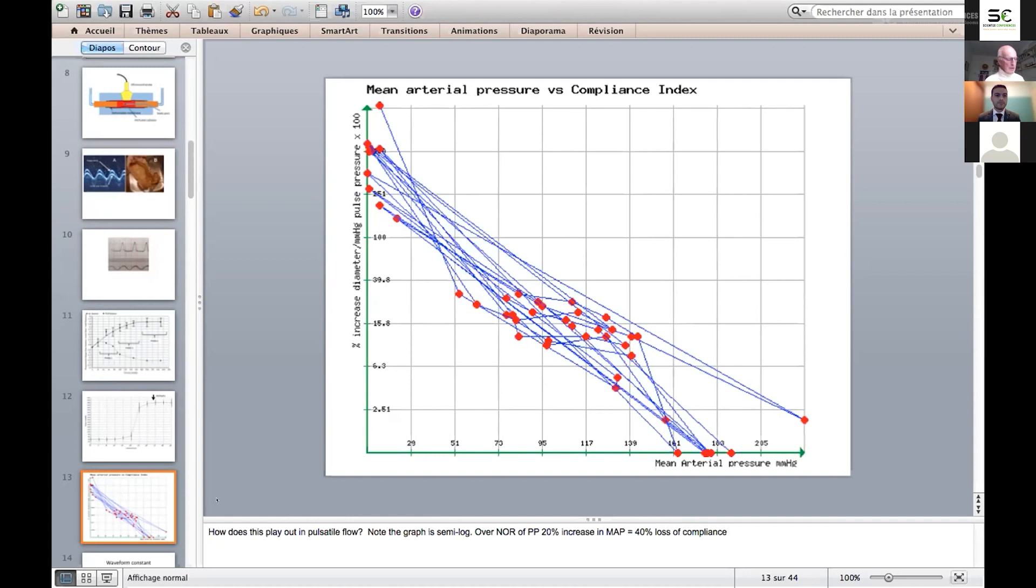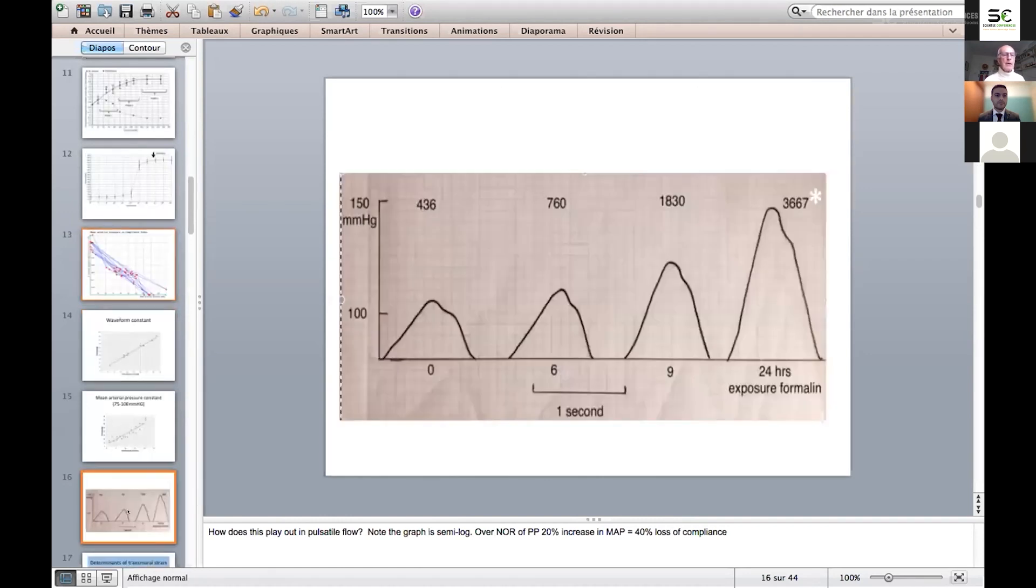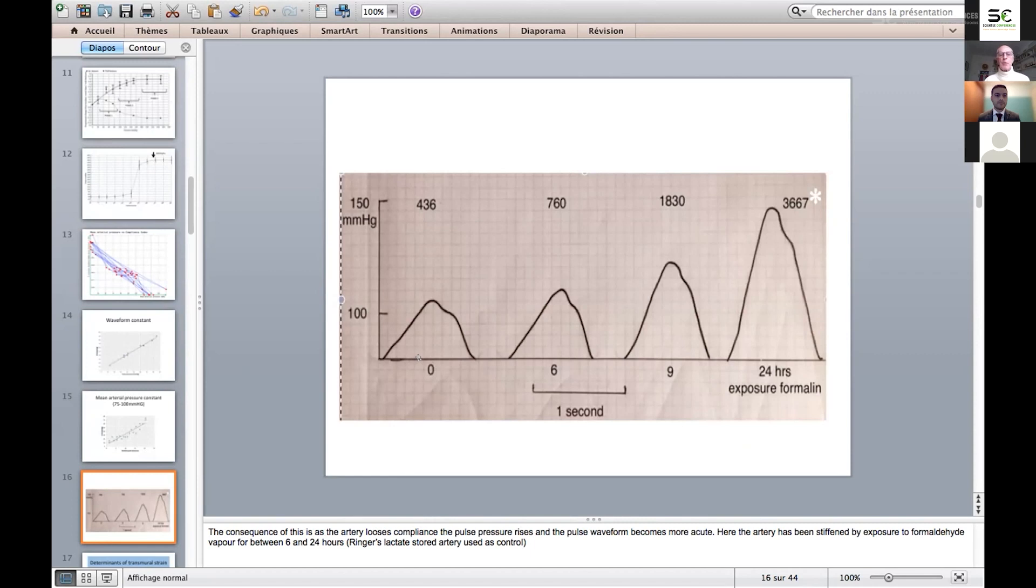How does that play through in terms of what happens to the main hemodynamic variables? Here we've hardened the arterial wall using formalin for 6, 9, and 24 hours exposure. We can see, using exactly the same input pressure wave and outflow resistance, that as we stiffen the arterial wall, the pulse pressure increases and the pulse wave becomes sharper peaked.